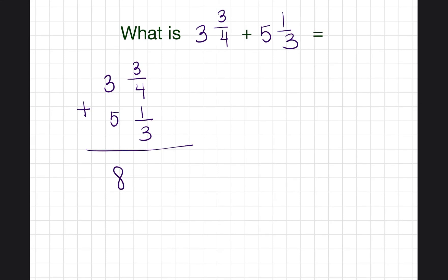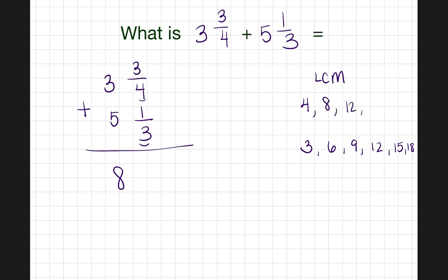Our first step is to add the whole numbers: three plus five is eight. Our second step is to add the fractions, but the denominators are different — one has four, one has three. So we need to find the least common multiple. Counting by three: three, six, nine, twelve, fifteen, eighteen. Counting by four: four, eight, twelve, sixteen, twenty. Twelve appears in both lists, and it's the least common multiple, so our new denominator is twelve.